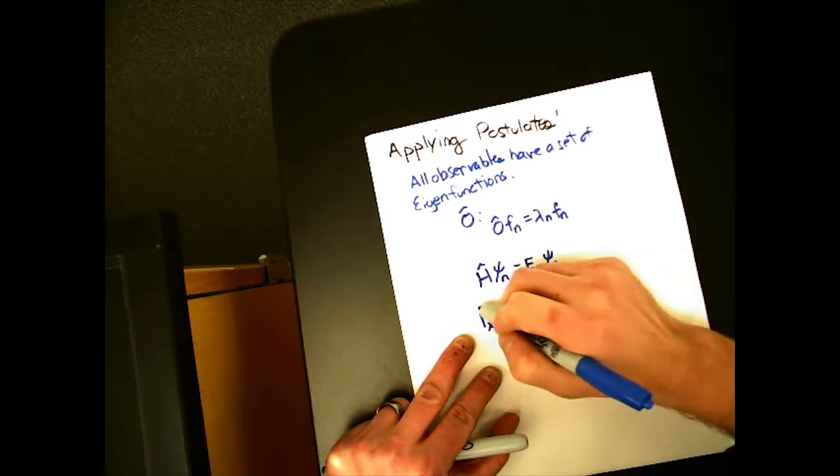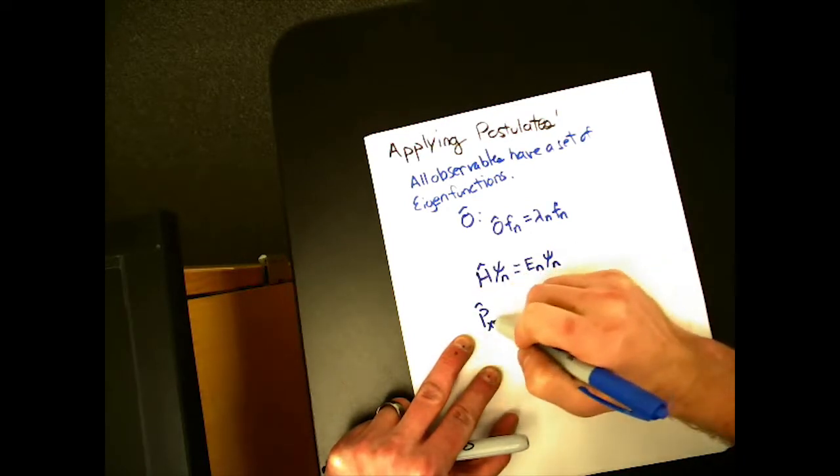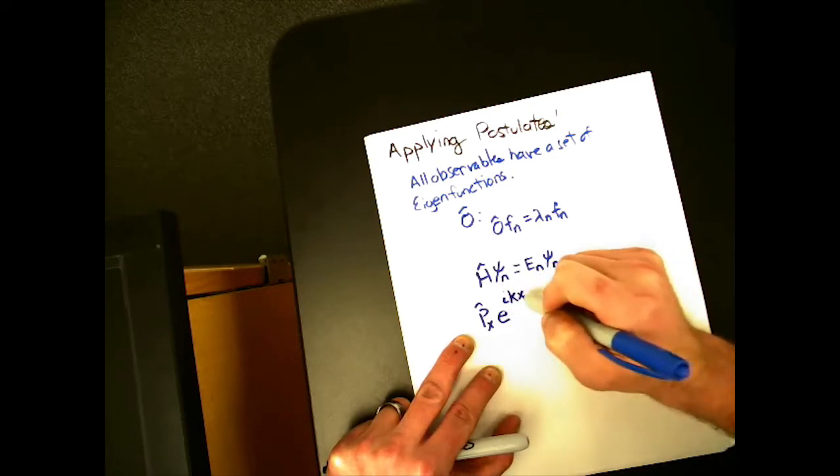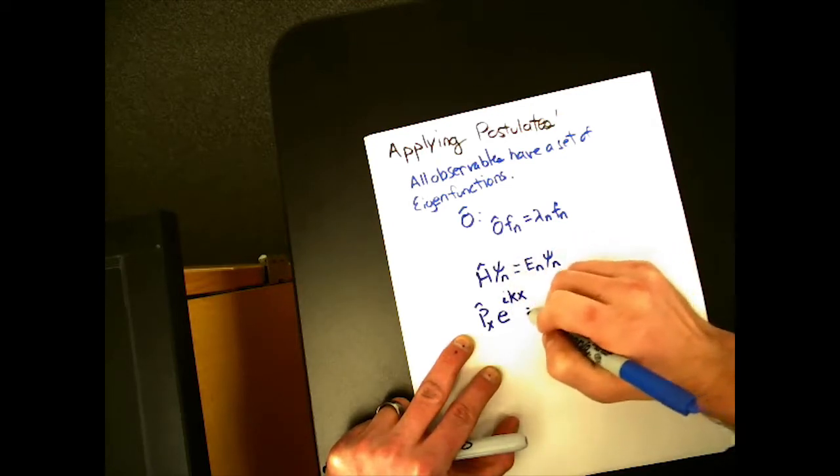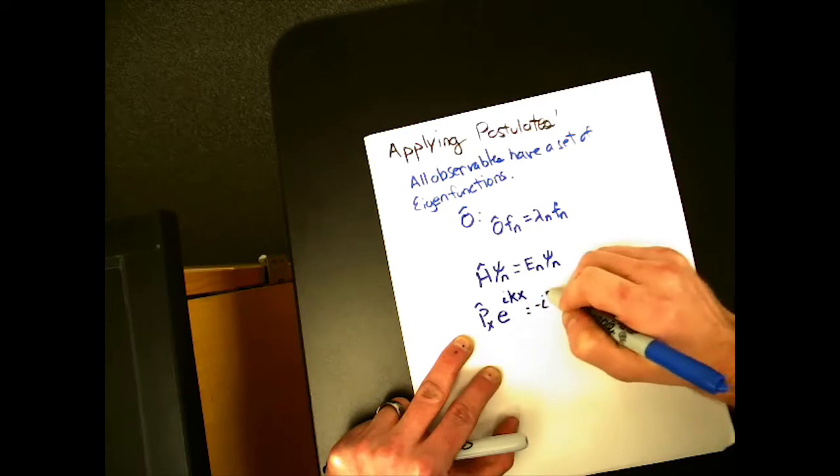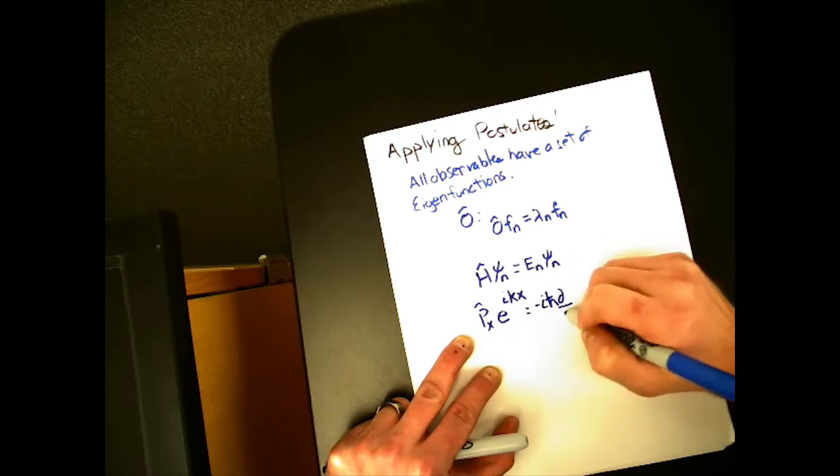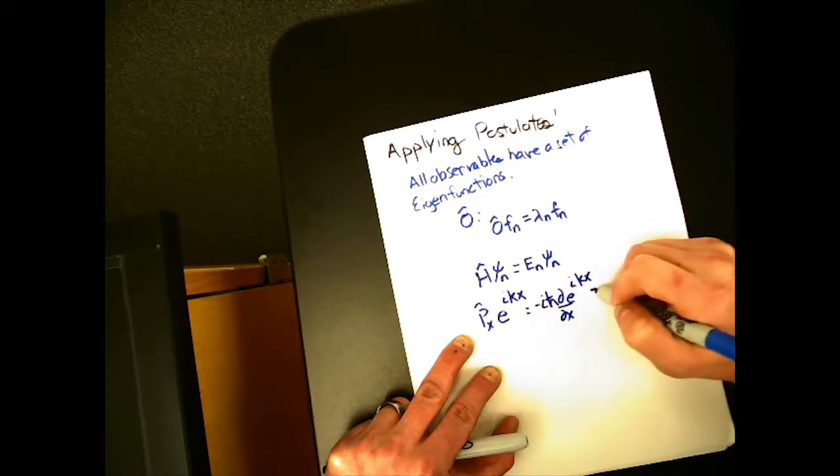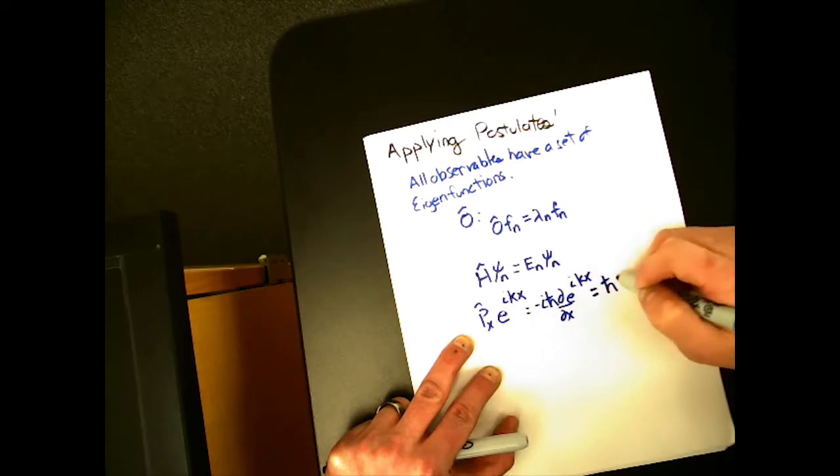Momentum, px, operating on this type of function, which is called a plane wave, e to the i kx. We've got minus i h bar d by dx, e to the i kx, equals h bar k, e to the i kx.